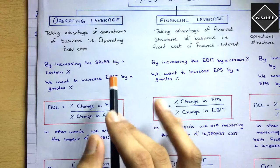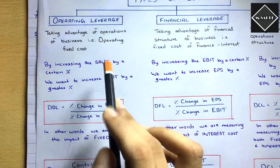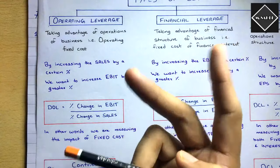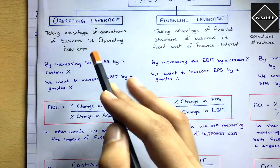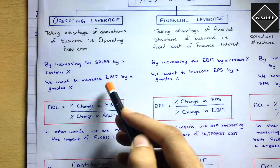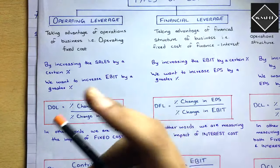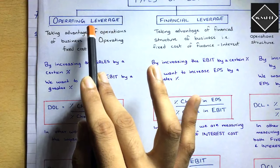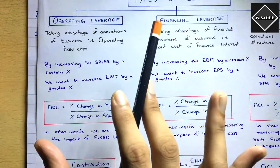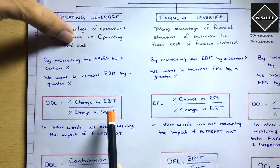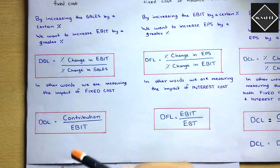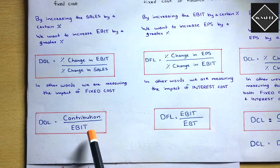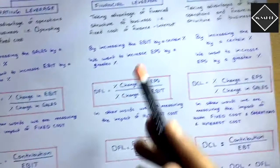For example, if operating leverage is 2 times and you increase sales by 1%, EBIT will increase by 2% — that is an advantage. But if sales decreases, EBIT will decrease by twice as well — that is a disadvantage. So having more or very less operating leverage is not good; it should be optimal. The formula is: contribution divided by EBIT — this is the simple formula to use in exams.